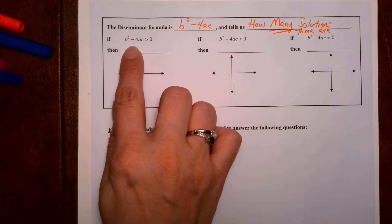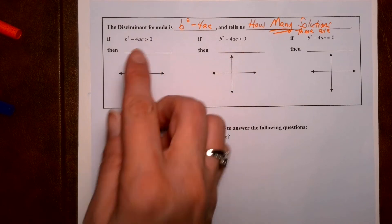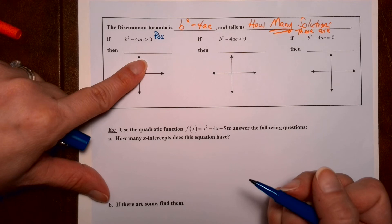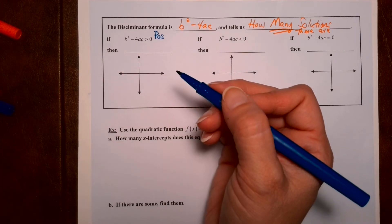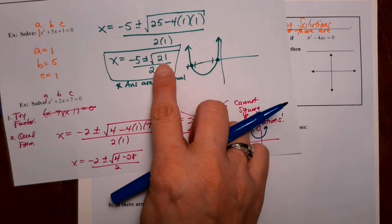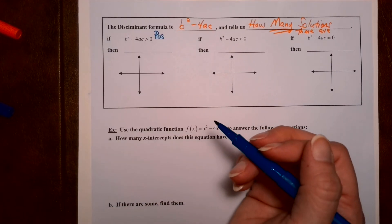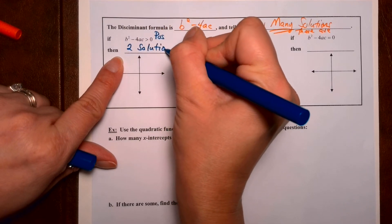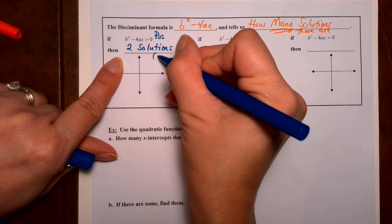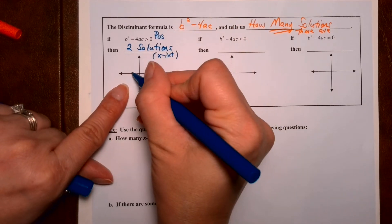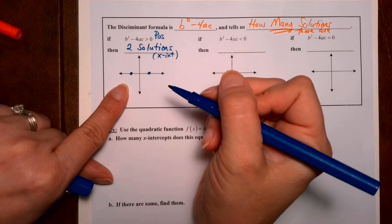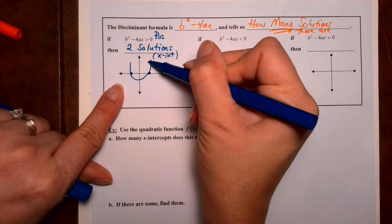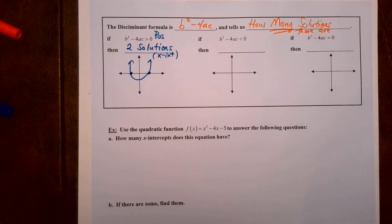If the discriminant is greater than zero — so if the discriminant is positive, like we had in that first example — then we're going to get two x-intercepts. There are two solutions. The parabola could be opening up or opening down, but it's going to touch the x-axis two times.